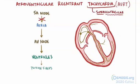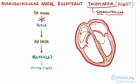Another type of re-entrant circuit is atrioventricular nodal re-entrant tachycardia, or AVNRT. AVNRT, just like AVRT, is a type of supraventricular tachycardia, but with AVNRT it's in or near the AV node, which just like before contracts the ventricle and the atria every time it goes around.